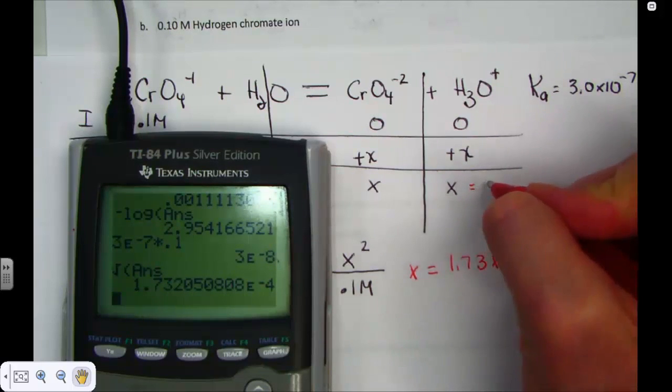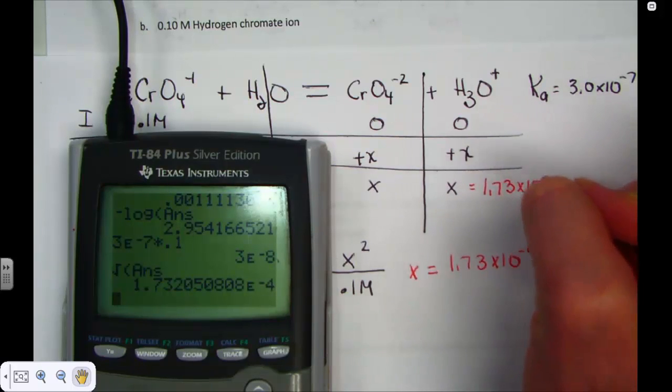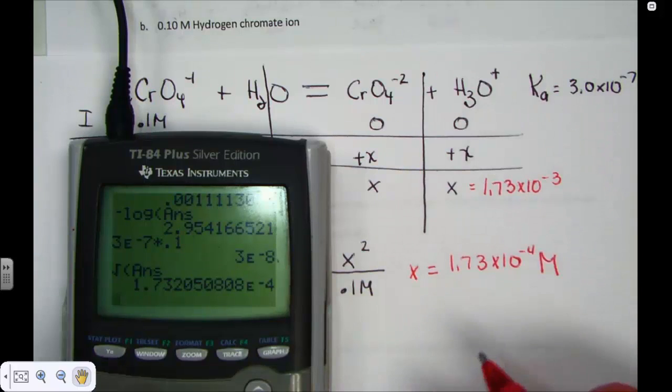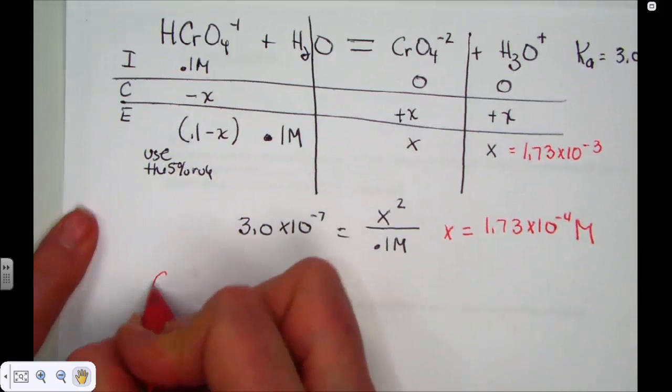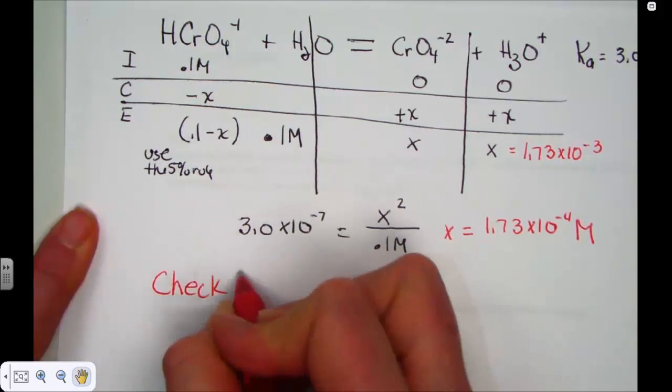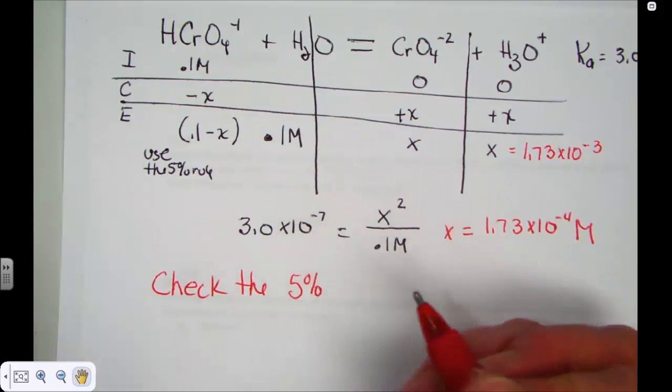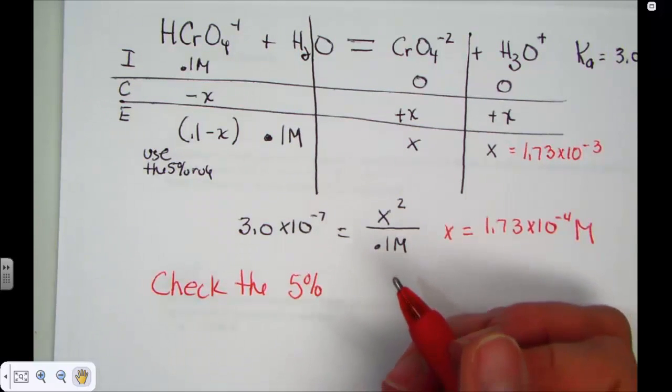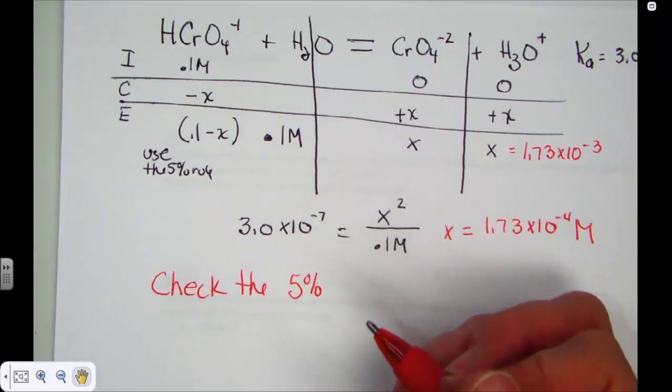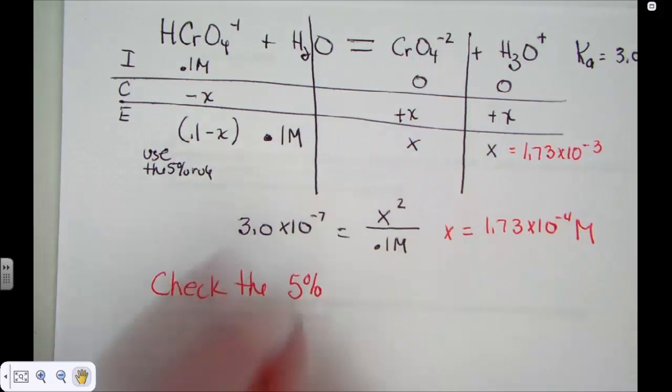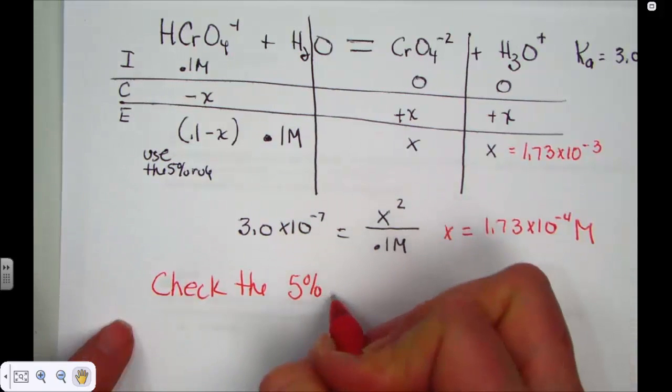I cross-multiplied and square root, and the value of X was 1.73 times 10 to the negative 4th molar units. Remember, that's what we let X stand for, the hydrogen ion or hydronium. Now before we proceed, it's just good to check the 5% rule, because if indeed it doesn't work, I've got to go back and use the quadratic equation. I always like to assume first, check it, and then proceed.